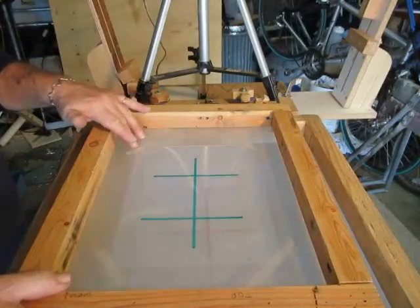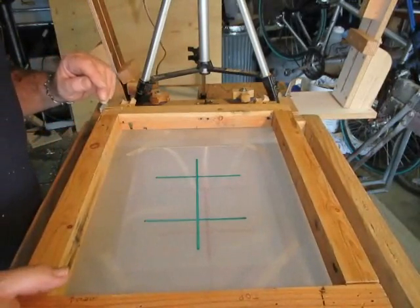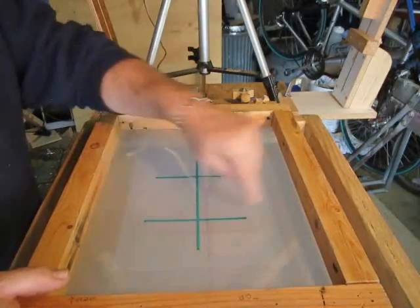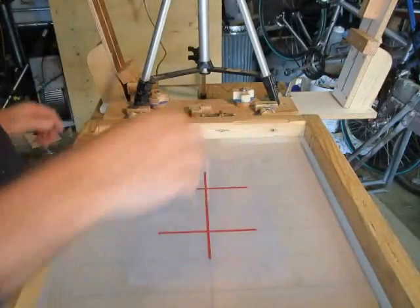And all I've done here is I took one of my film positives and some dry-erase markers and just drew the crosshairs that are on the grid of my palette.